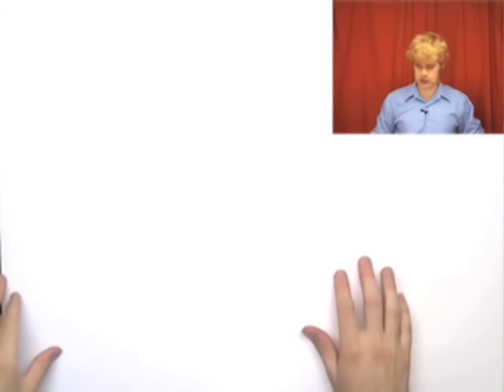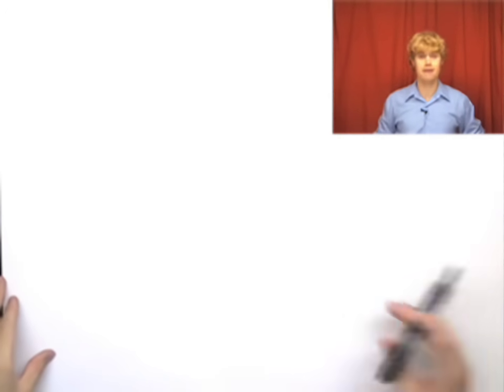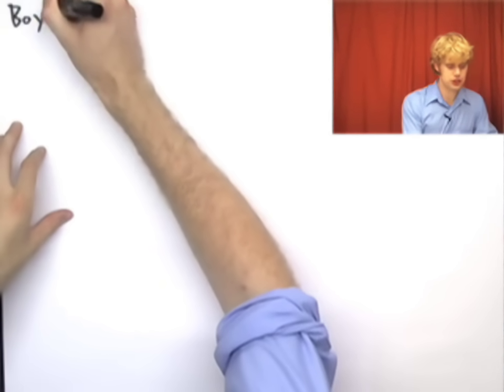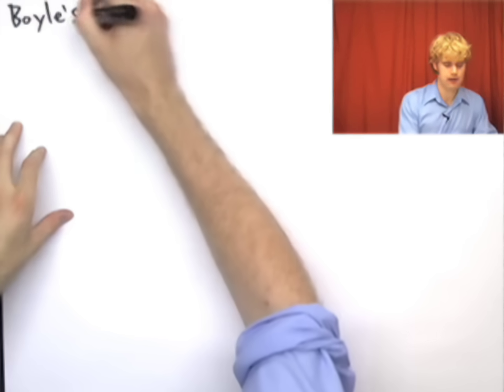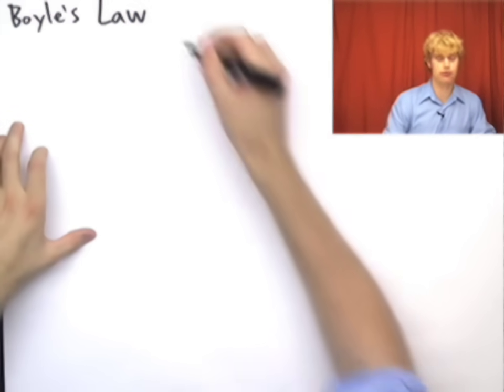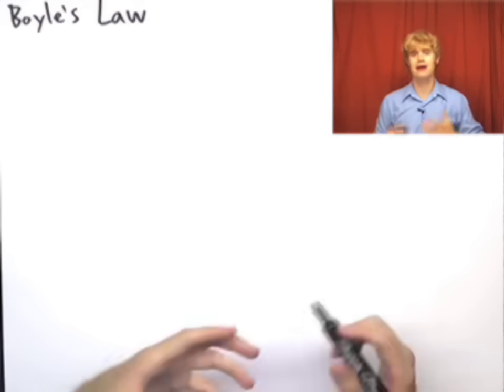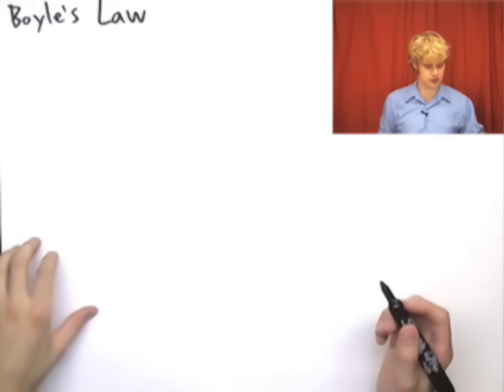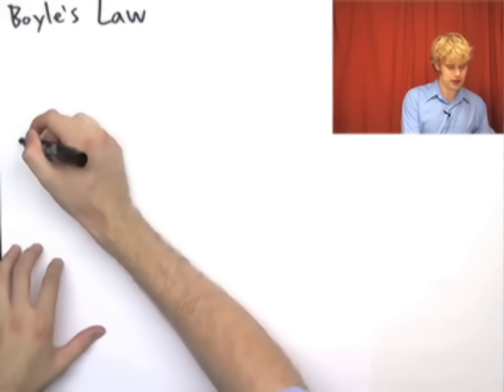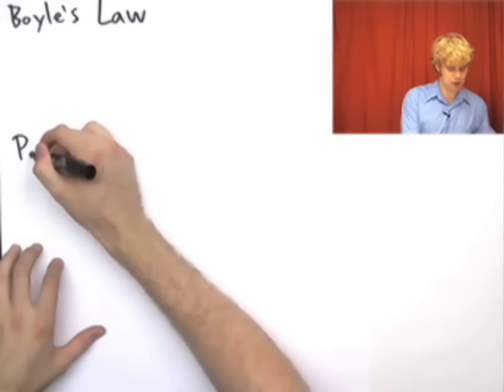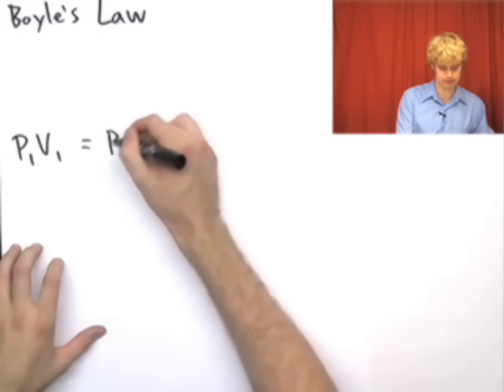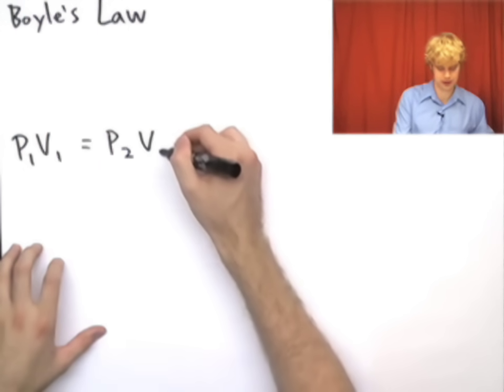Let's look at how we can actually plug numbers into an equation and use this relationship to solve math problems. The relationship between pressure and volume of a gas is described by Boyle's law, which is named after the scientist who figured out what the relationship between pressure and volume of a gas was. Boyle's law can be stated that P1 times V1 equals P2 times V2.